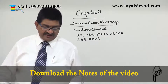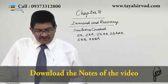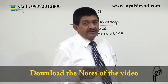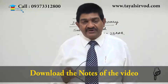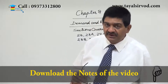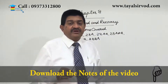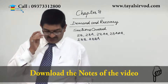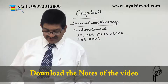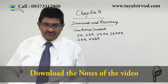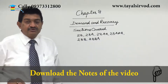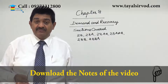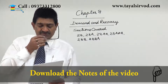The learning outcomes say: comprehend and analyze the provisions relating to recovery of duties not levied, not paid, short levied, short paid, or erroneously refunded. So the duty is either not paid, short paid, not levied, short levied, or for some reason wrongly refunded. This chapter is actually about demand — how that amount of duty can be demanded and then recovered. Then compute the amount of interest on delayed payment of duty. Then identify the situations in which the central government is empowered not to recover duty — that is Section 28A, where the amount of duty can be waived off, i.e., remission can be allowed.